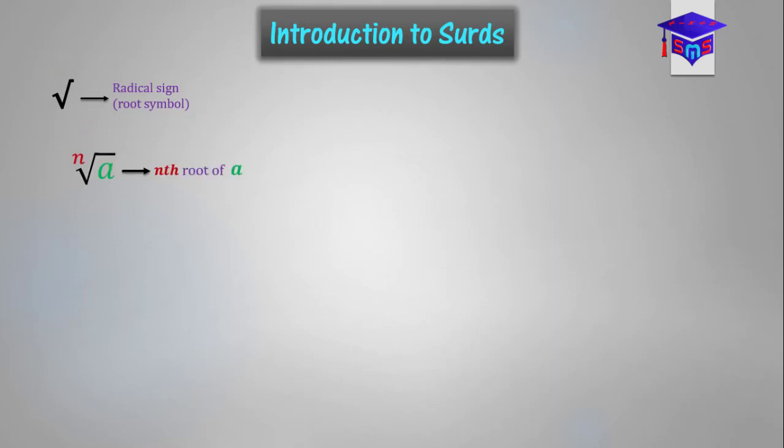An expression like this is pronounced as the mth root of a. Where n is the order of the root. And then the symbol is the radical sign. And then the a under the root is called the radicand.